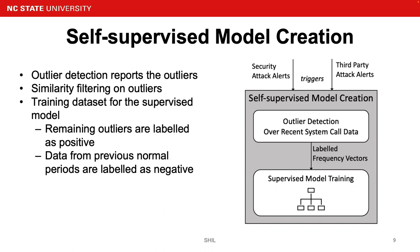After collecting those outliers, in order to purify them, we adopt similarity filtering. The last step is to create a training dataset for the supervised model. The remaining outliers after similarity filtering are labeled as positive, and the data from previous normal periods are labeled as negative. After we have this training dataset, we can then perform supervised model training.